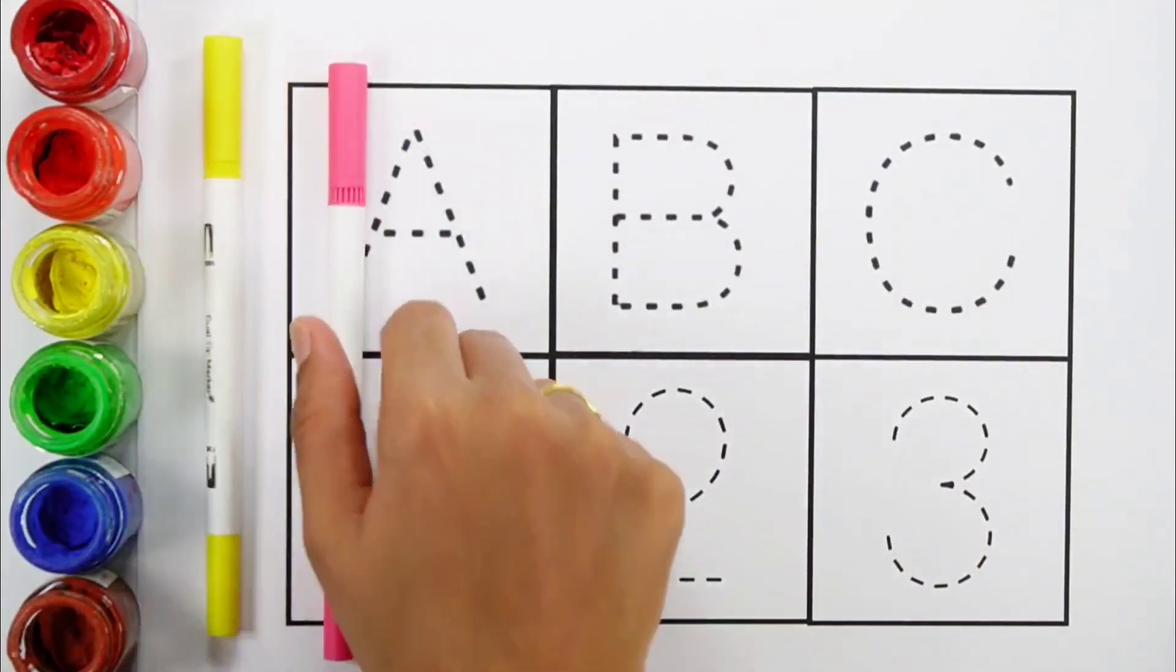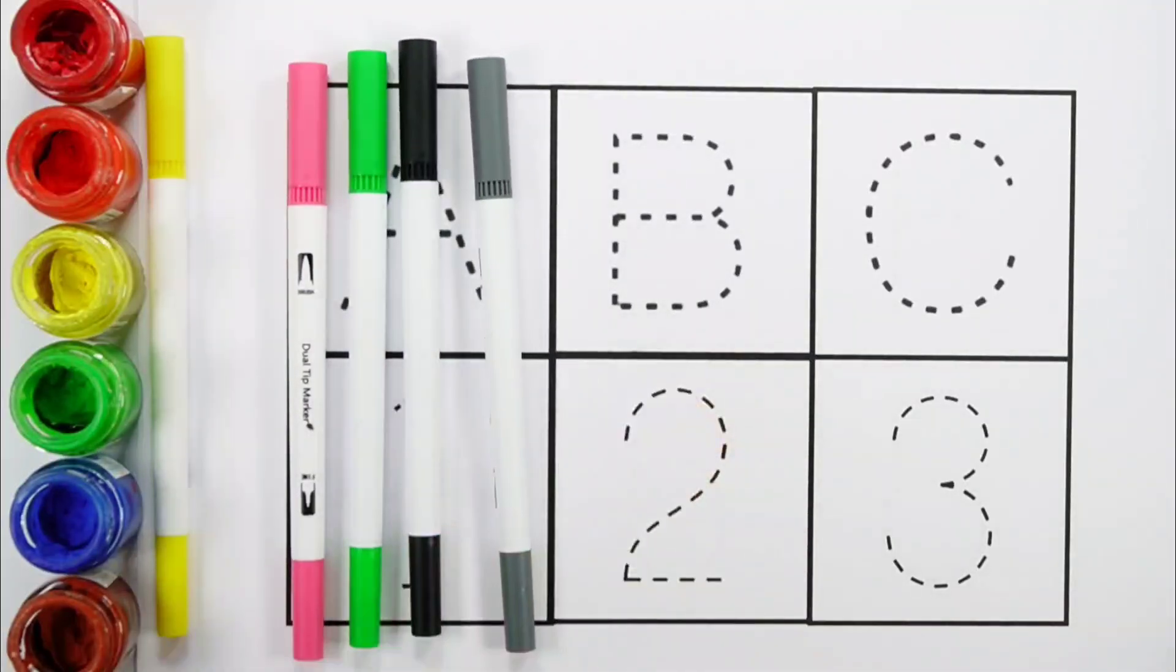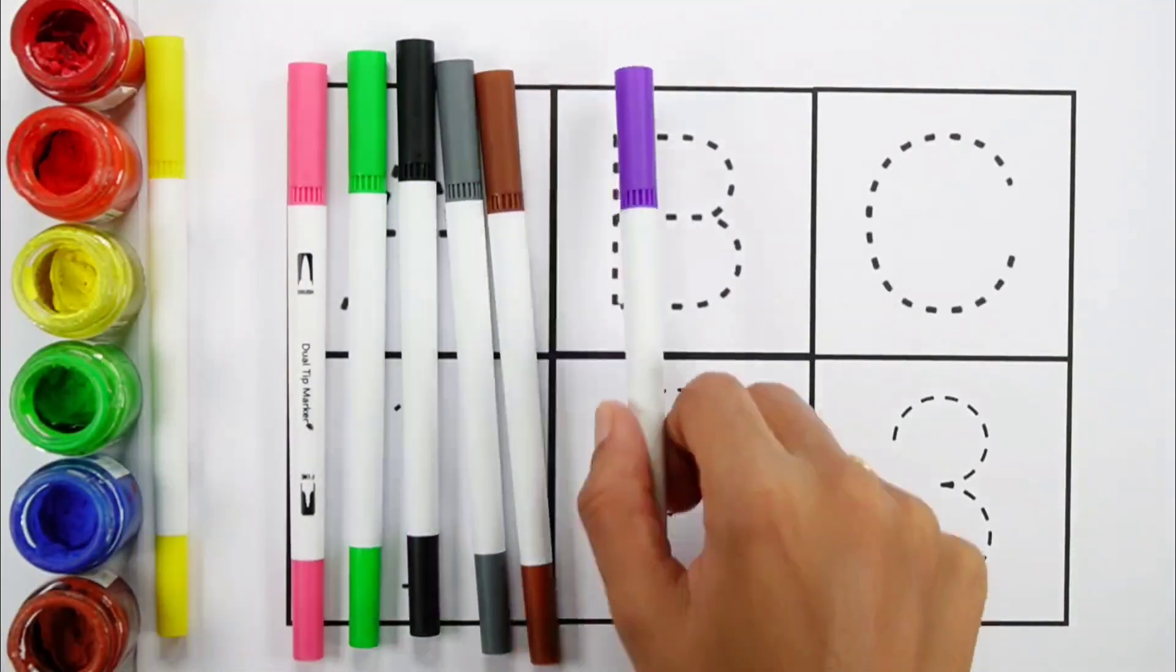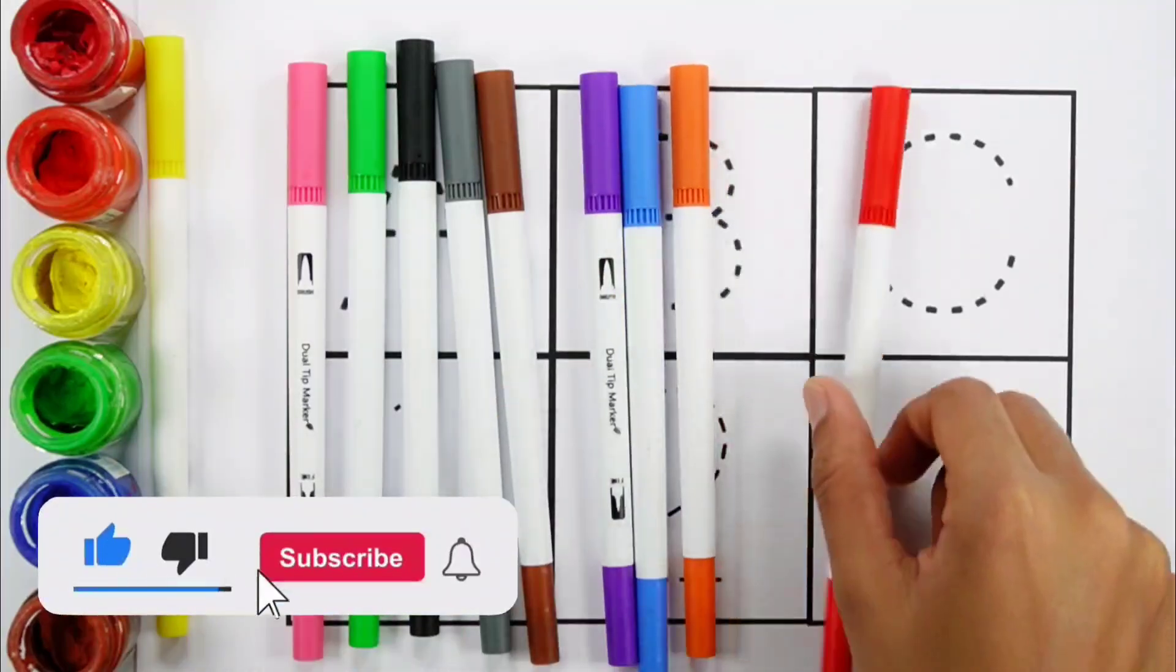Yellow color, pink color, green color, black color, gray color, brown color, violet color, blue color, orange color, red color.